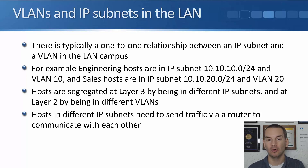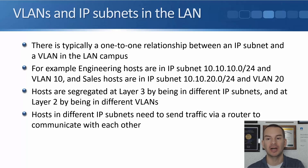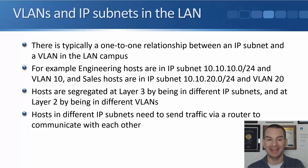For example, we'll have engineering hosts in IP subnet 10.10.10.0/24 associated with VLAN 10, and a different IP subnet for sales of 10.10.20.0/24 with its own associated VLAN 20. Hosts are segregated at Layer 3 by being in different IP subnets, and segregated at Layer 2 into separate broadcast domains by being in different VLANs.